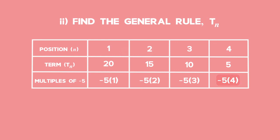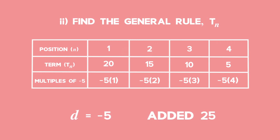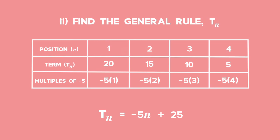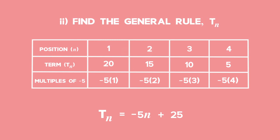Lastly, we have negative 5 times position 4, which is negative 20. The term value is 5, so to get from minus 20 to 5, we add 25. Each time we've taken the constant difference, multiplied it by the position of the term, and then added 25. This is what we call the general term, because it can be used to work out any term in the sequence. Formally, we can say that tn equals negative 5 times n plus 25.